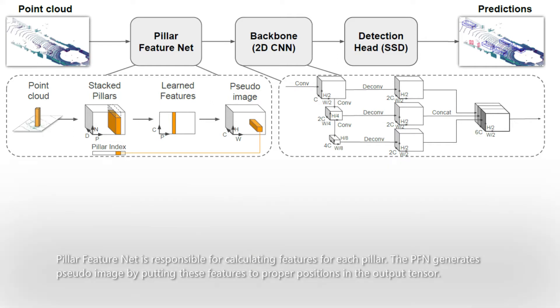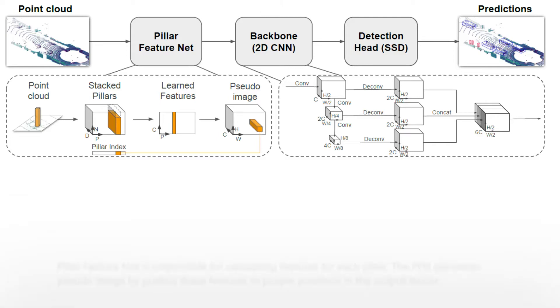Pillar FeatureNet is responsible for calculating features for each pillar. The PFN generates a pseudo-image by putting these features to proper positions in the output tensor. This procedure is called a scatter operation.